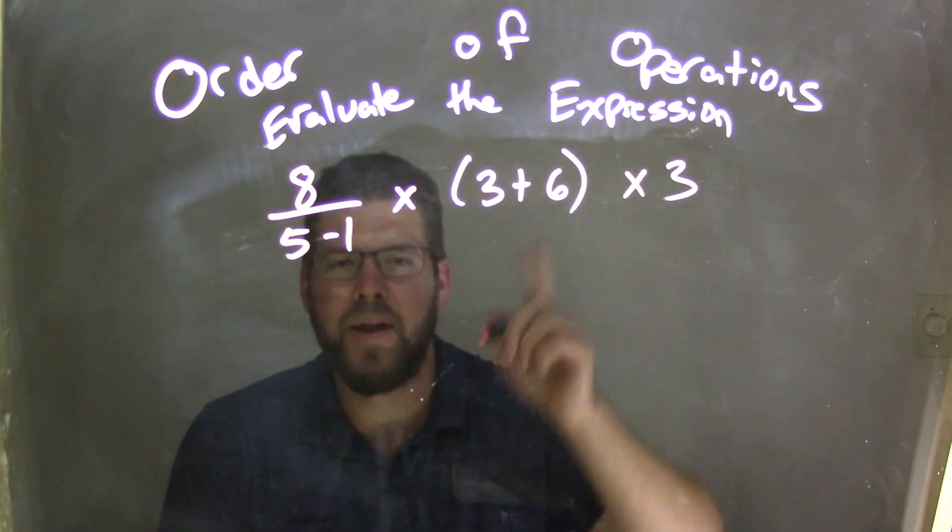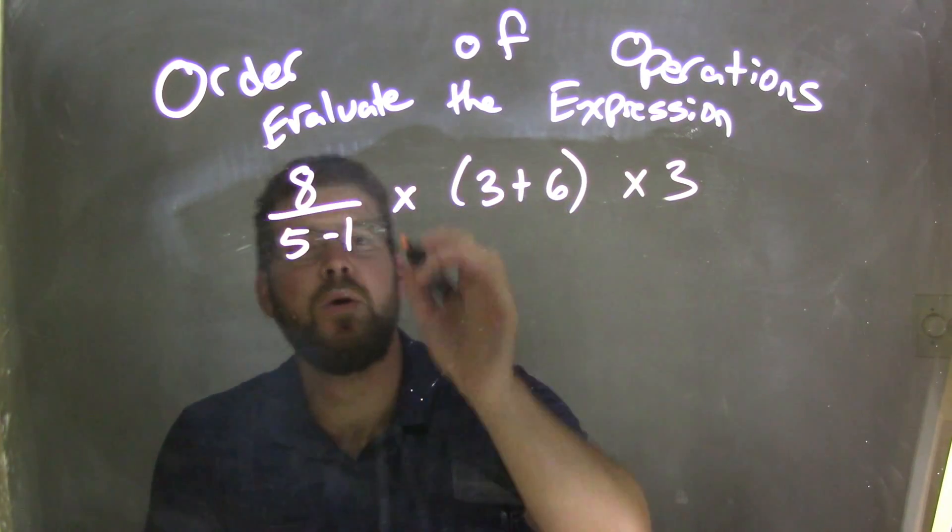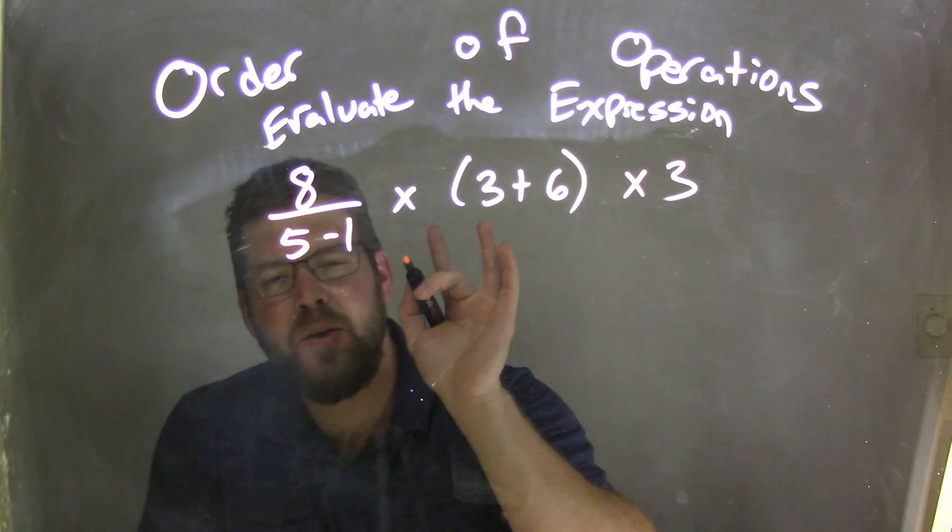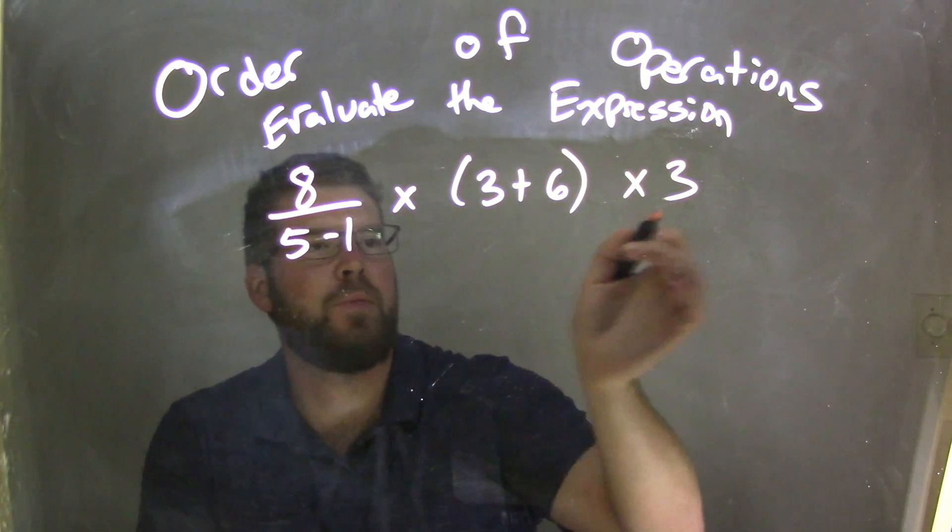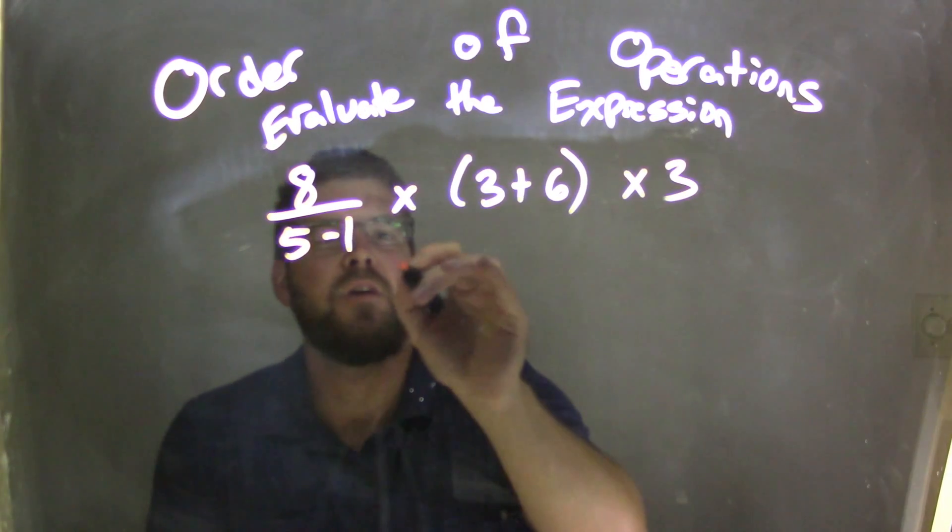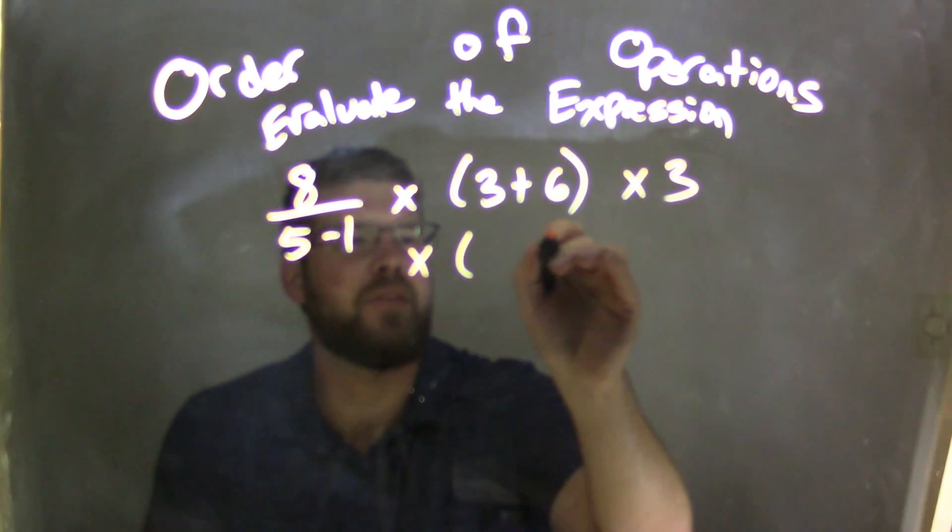I would see the parentheses and know that I need to deal with that first, always. So I don't necessarily want to rush to it. I see the fraction, I see it separated by multiplication, multiplied by multiplication at the end. So I kind of write it in steps like this.